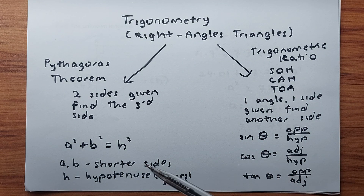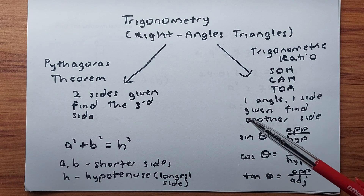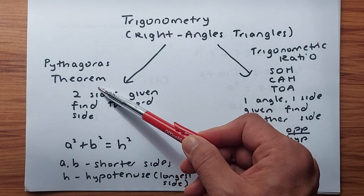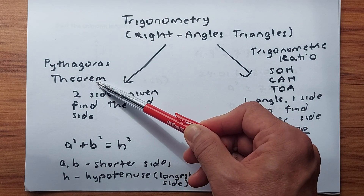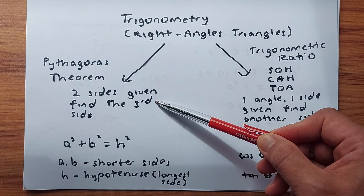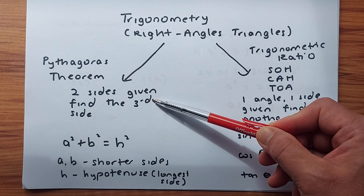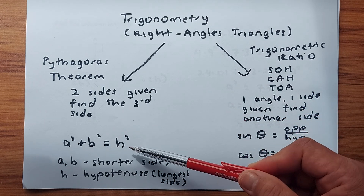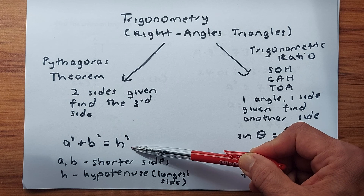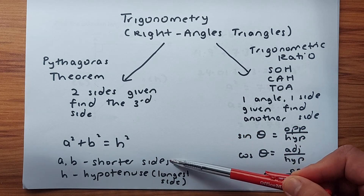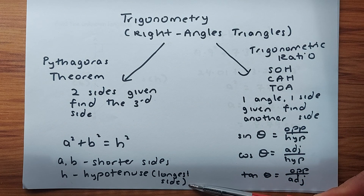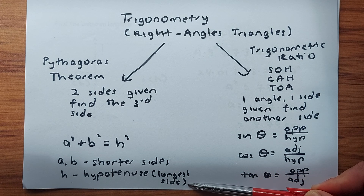For year 10 and year 11 the triangles we're going to learn are right angle triangles. Only in year 12 will you learn non-right angle triangles. To solve angles or sides in right angle triangles there are two possible ways. The first is called the Pythagoras theorem, which is used when two sides are given and you need to find the third side — no angles are given except the 90 degrees angle. The formula is A squared plus B squared equals H squared, where A and B are the two shorter sides and H is the longest side, the hypotenuse, always found opposite the 90 degrees angle.